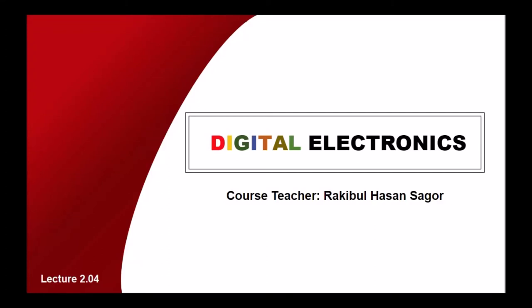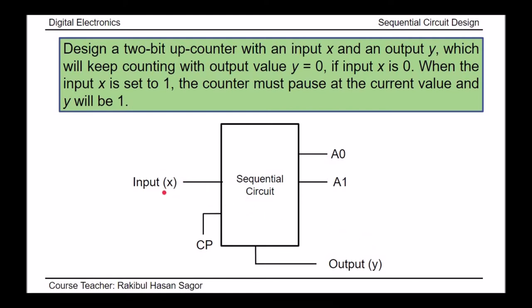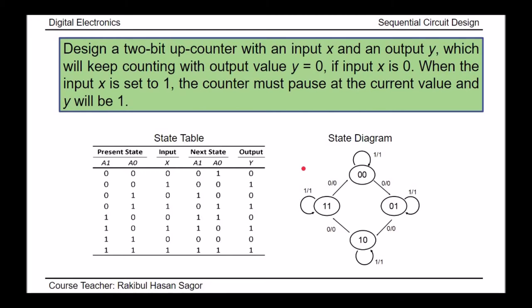In today's class we will continue with the problem that was stated in the previous class. The problem states that states A0 and A1 will be changing on every clock pulse triggering, starting from 0 0, 0 1, 1 0, 1 1, if the input equals 0, and at that moment the output will be 0. But if the input equals 1, then this change in A0 and A1 will be stopped even though the clock pulse triggers.